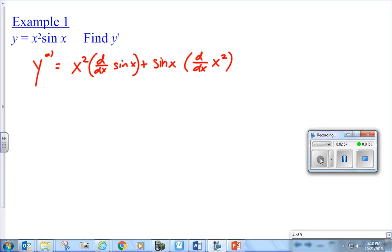Times the derivative of the first. And if you get good at this, you don't have to write the d/dx sine of x, you can just put the derivative there. So, I've got x squared. What's the derivative of sine? Cosine. Cosine of x. Plus sine of x times 2x.